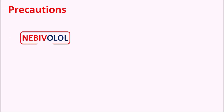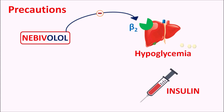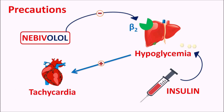What are the precautions? One important precaution is that nebivolol can inhibit the beta 2 receptors located on the liver. These beta 2 receptors are responsible for hepatic glucose production. When these receptors are blocked, hepatic glucose production is reduced, resulting in hypoglycemia. This is particularly important in diabetic patients. In patients with diabetes who are taking insulin, the insulin can further increase the hypoglycemia. So when nebivolol is combined with insulin, it can produce significant hypoglycemia, and this hypoglycemia can induce tachycardia in patients, which should be carefully monitored.